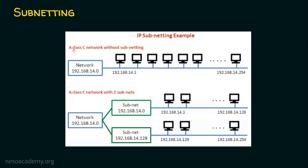Let's see an example for subnetting. This is a class C network without subnetting. The IP address starts with 192, and if the first octet is between 192 and 223, it is class C. The network address is 192.168.14.0, and the default subnet mask for class C is 255.255.255.0. The first address represents the whole network, and the last address 192.168.14.255 is the broadcast address. All other IP addresses can be assigned to hosts.